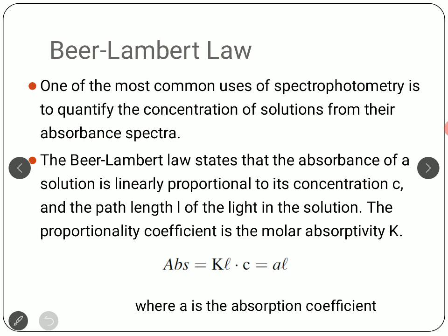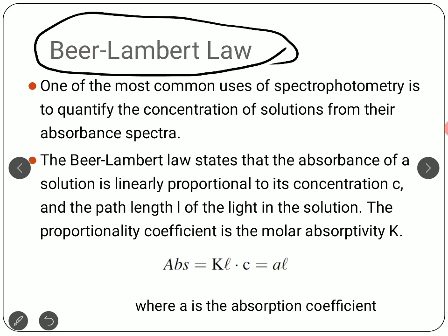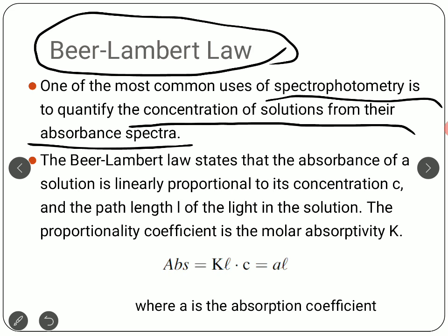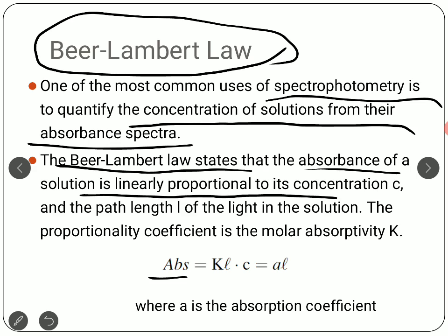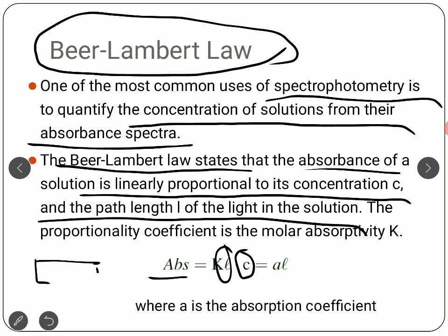Beer-Lambert's law is a very important linear law relating to absorbance. It states that absorbance is linearly proportional to the concentration c of the solution and the path length of the light through the solution. Using a spectrometer and absorbance spectra, one can find the concentration of a solution. The path length is the distance the incident radiation must travel through the sample, and absorbance depends on both concentration and path length.